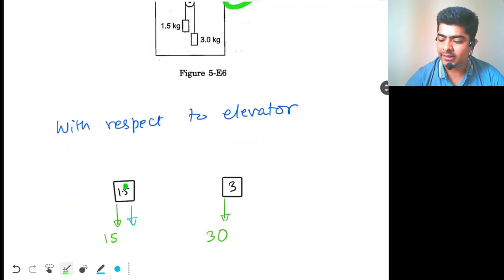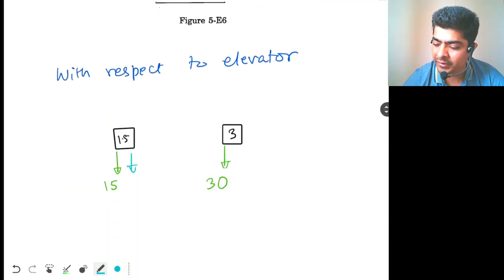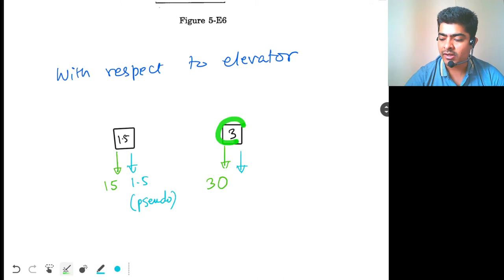So, pseudo force will be how much? g by 10 into 1.5. Now, see g by 10 will be how much? g itself is 10. So, 10 by 10. So, that will be 1. So, pseudo force over here will be 1.5. And here the pseudo force will be how much? Mass into acceleration. So, 3 into a. So, a is again 1. So, 3 into 1 is 3.